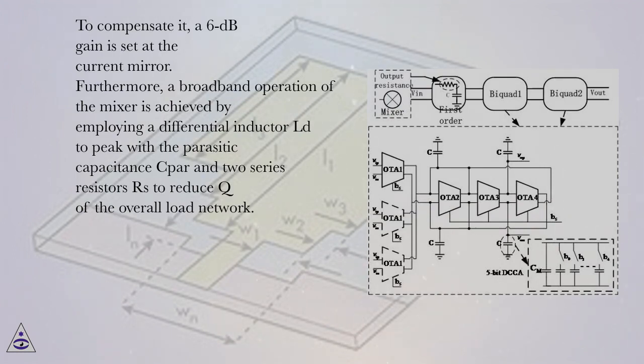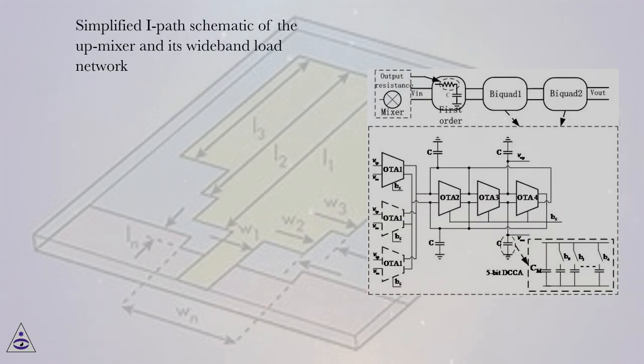Furthermore, a broadband operation of the mixer is achieved by employing a differential inductor LD to peak with the parasitic capacitance Cpar and two series resistors Rs to reduce Q of the overall load network. Simplified I-path schematic of the ABB mixer and its wideband load network.